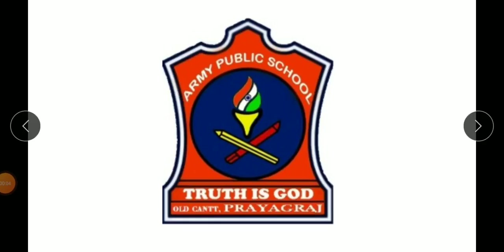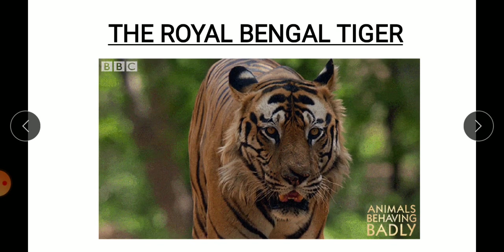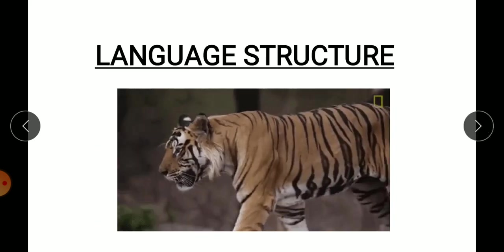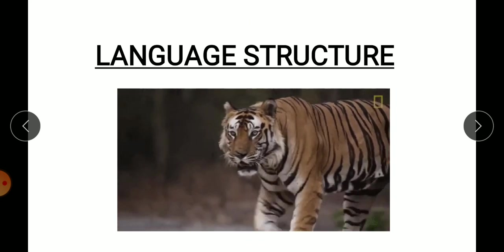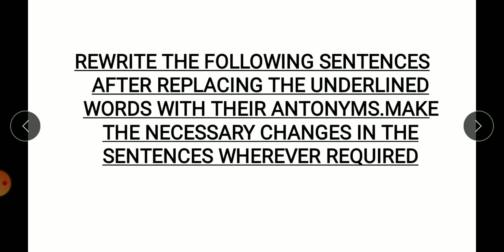Good morning class. In today's English class we will be doing the language structure and grammar of the chapter 'The Royal Bengal Tiger'. Let's start. The first exercise is: rewrite the following sentences after replacing the underlined words with their antonyms, making the necessary changes wherever required. First, you have to understand what antonyms are.